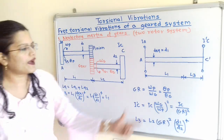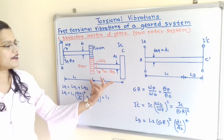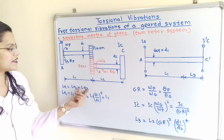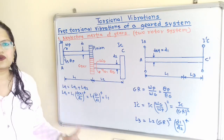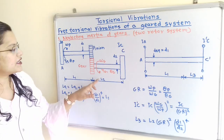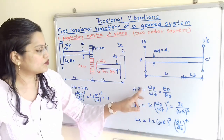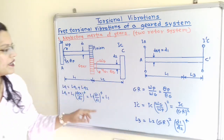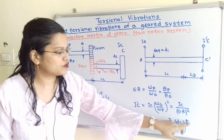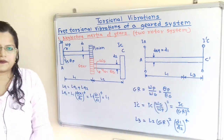To find the equivalent length L3, which corresponds to LQ2 for the second part, we use the formula: L3 equals L2 multiplied by gear ratio squared multiplied by (D1 / D2) raised to 4. This is the formula to calculate L3.